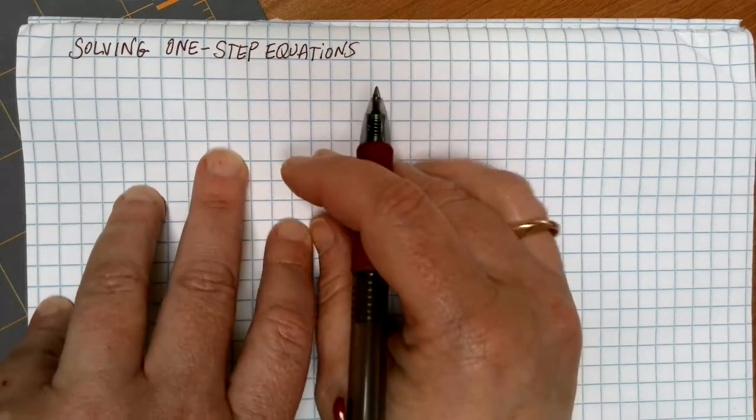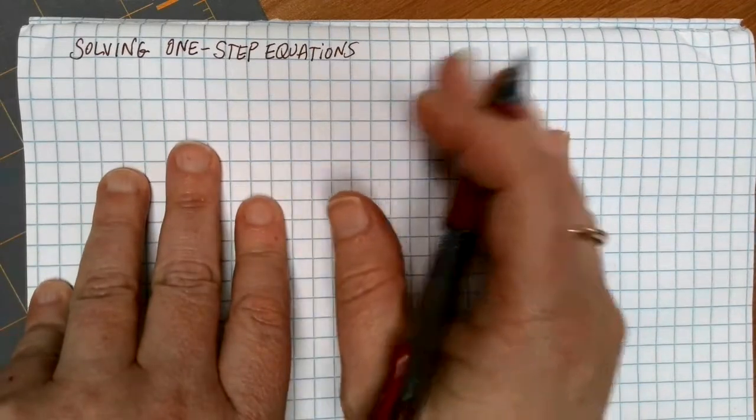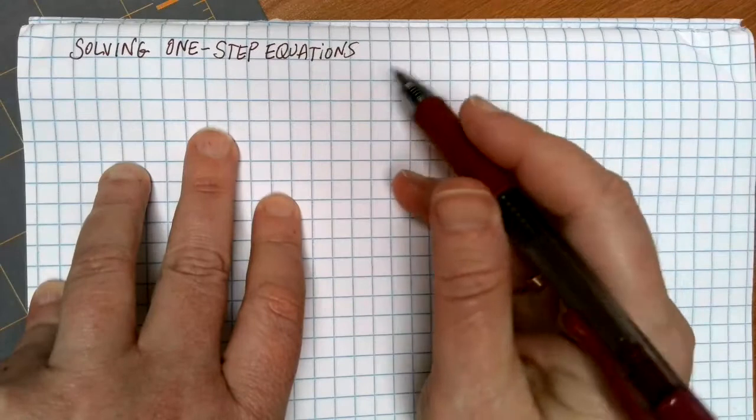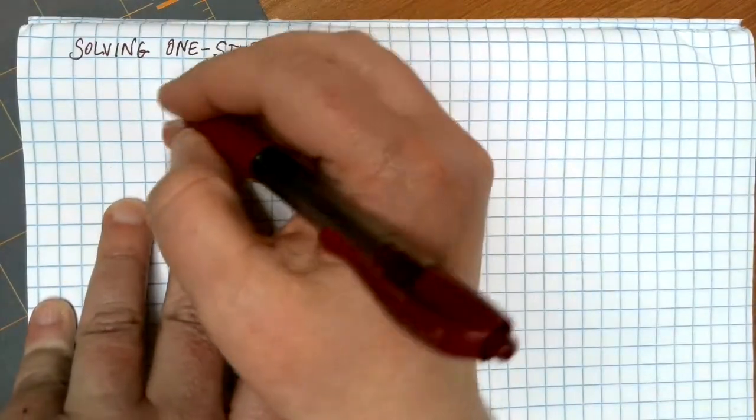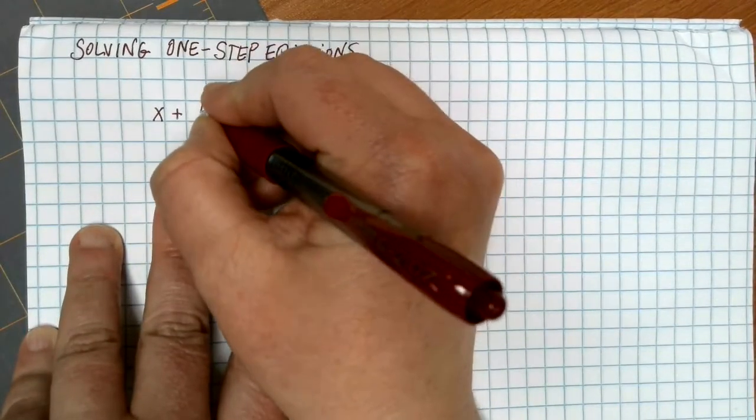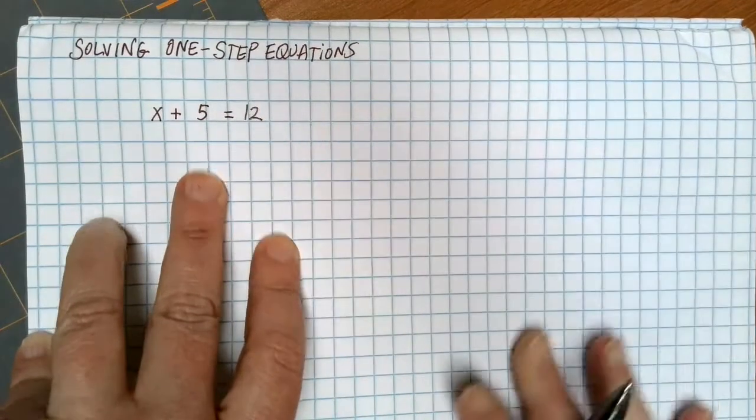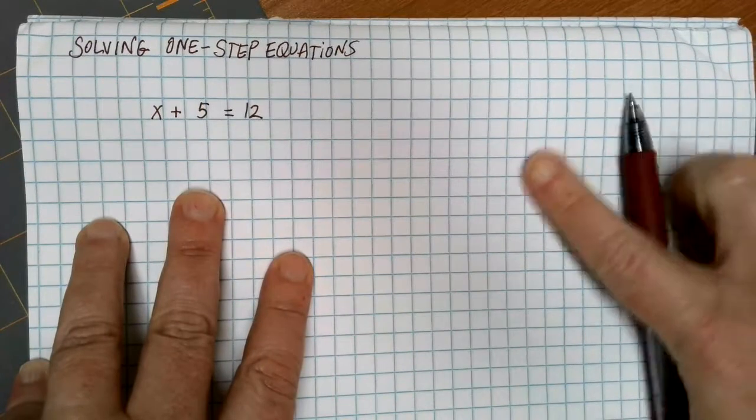One of the main topics in any algebra class is solving equations. What we're going to be going over today is how to solve some of our most basic equations. Let's suppose that we have a problem like this. If I have x plus 5 is equal to 12, I have a one-step equation that I can work on.